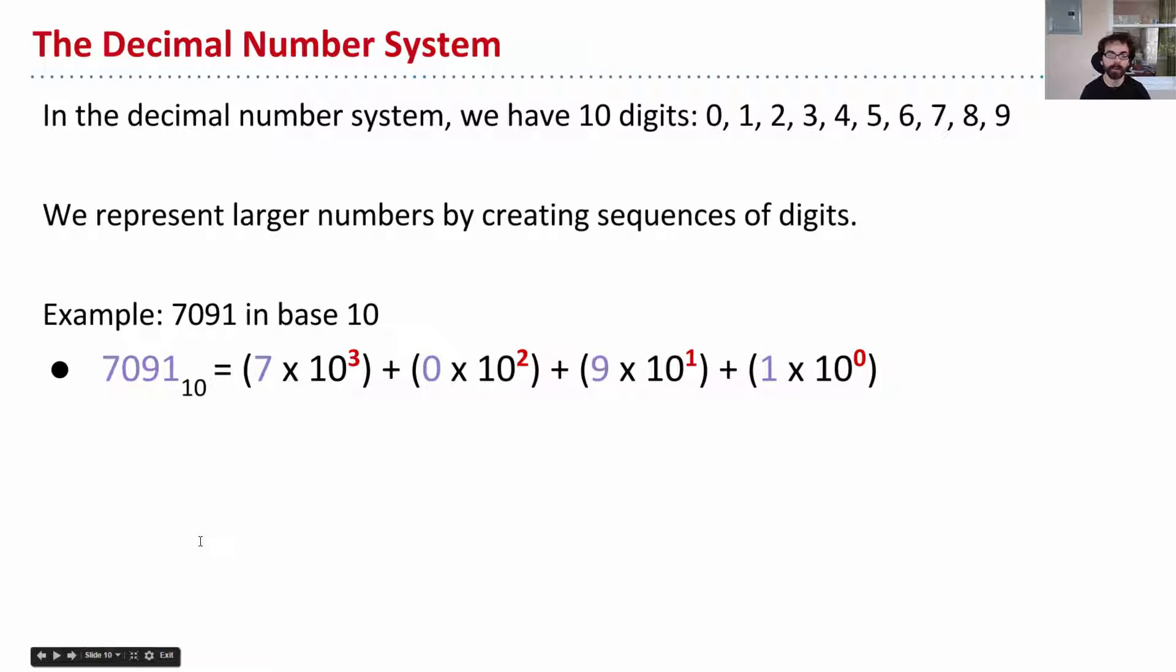So I'll start by reviewing the decimal number system, which you know quite well. We have 10 digits in decimal: 0, 1, 2, 3, 4, 5, 6, 7, 8, 9. And we represent larger numbers, that is larger than 9, by creating sequences of digits. So for example, there's a trick that we use where we want to represent the number 7,091, we write 7, 0, 9, 1.